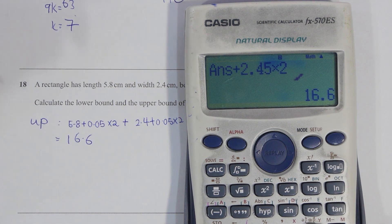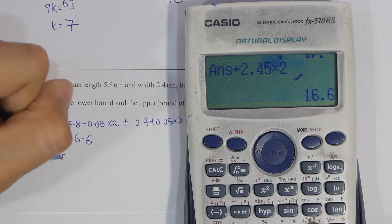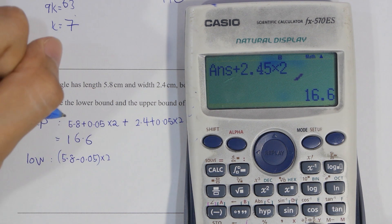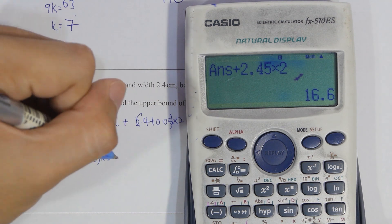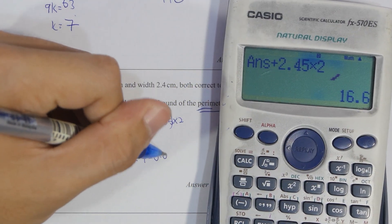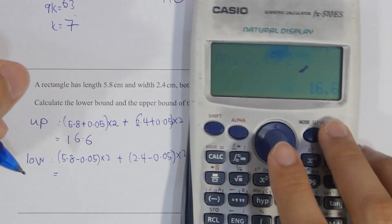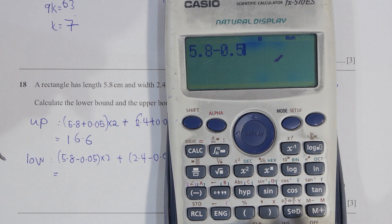But for the lower bound, do it the other way around. So the lower bound will actually be 16.2.